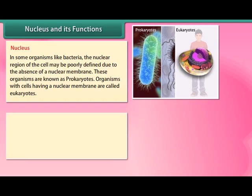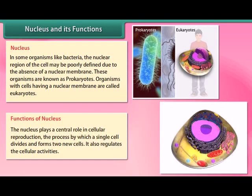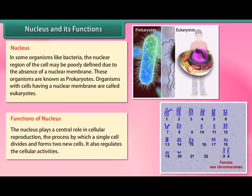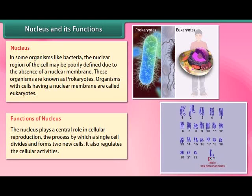The nucleus plays a central role in cellular reproduction — the process by which a single cell divides and forms two new cells. It also regulates cellular activities.